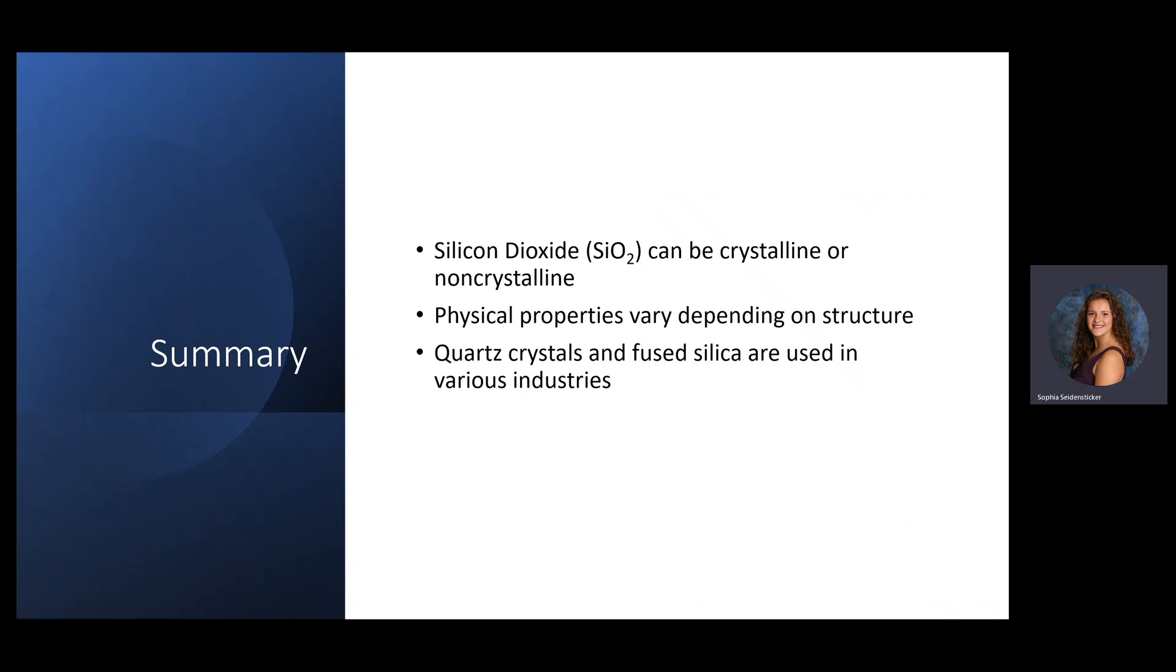In summary, silicon dioxide, or SiO2, exists in both crystalline and non-crystalline forms. While the chemical properties remain the same across its different forms, the physical properties of silica may vary depending on its solid structure. Quartz crystals and fused silica have uses in various industries due to their unique physical and chemical properties. Thank you for listening.